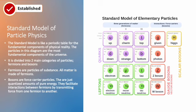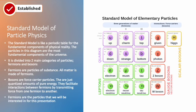Bosons, on the other hand, are force carrier particles — they're just quantized waves of pure energy. They facilitate interaction between fermions by transmitting force from one fermion to another. For example, photons are particles of light; they are the force carrier particle for the electromagnetic force, and they are what allows light from the sun, which is made of fermions, to interact with things here on Earth that are also made of fermions. Fermions are going to be the particles that we're interested in for this presentation.